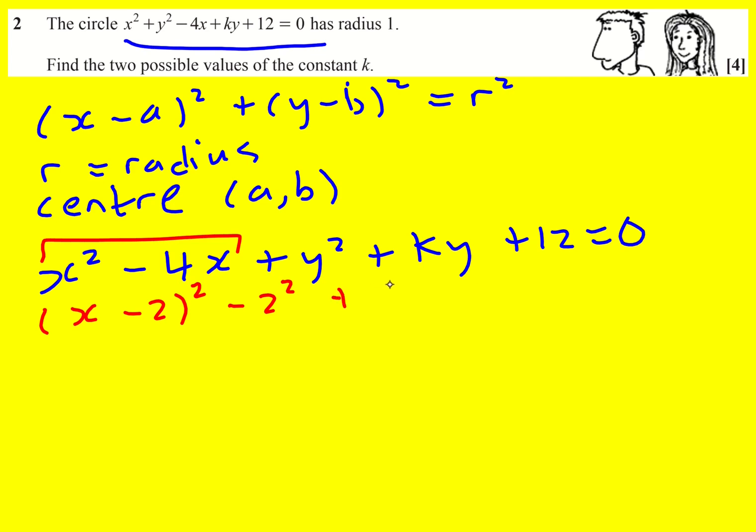And then I'm going to do plus. I'm not going to labor the detail on that. Make sure you revise completing the square if you're not happy with that. Then it's going to be y plus k over 2 all squared because that's going to give me y squared and it's going to give me k over 2y and then another k over 2y when I expand it out. And then I'm going to minus k squared over 4. I've done this all in one go. I'm basically squaring k over 2 and so I square the top and square the bottom plus 12 equals 0.